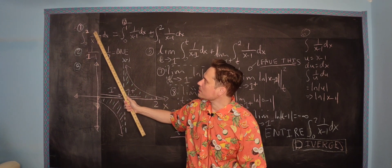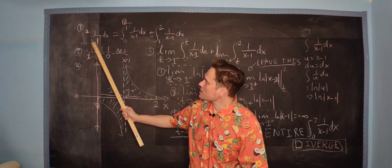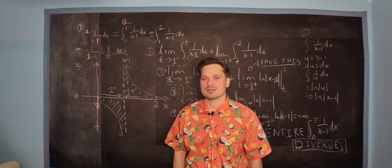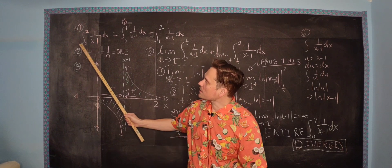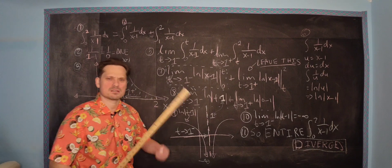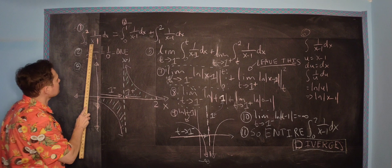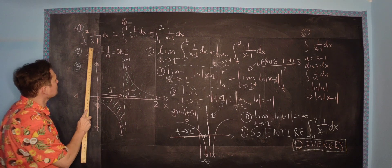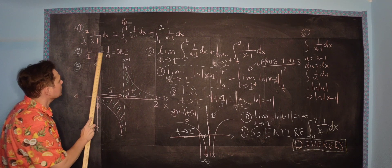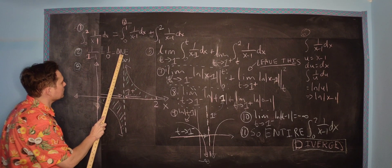The integral from 0 to 2 of 1 over x minus 1. It's an improper integral, and the issue is that the integrand has a discontinuity. If you replace x directly with 1, you would have 1 over 1 minus 1, which is 1 over 0, which is DNE. So this tells you it's not defined.